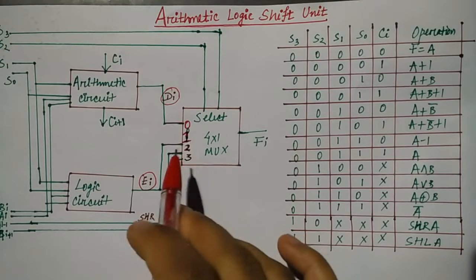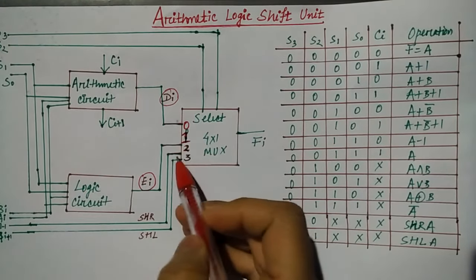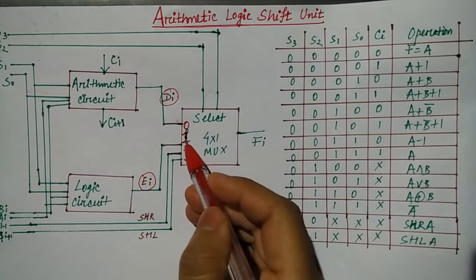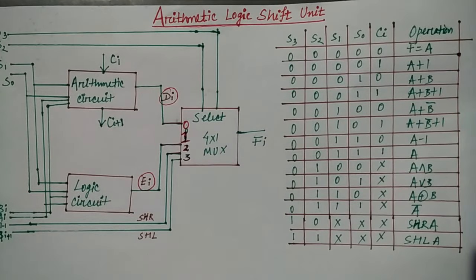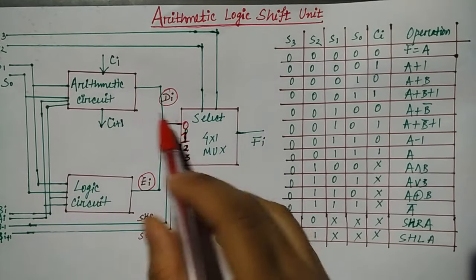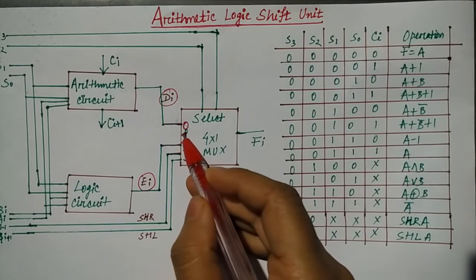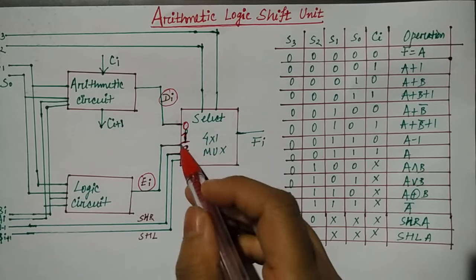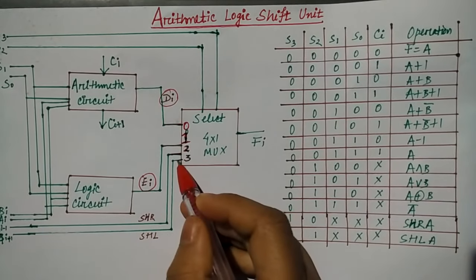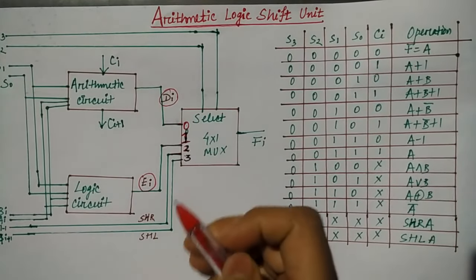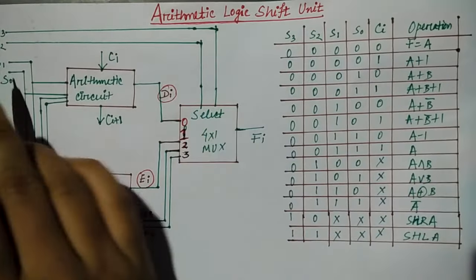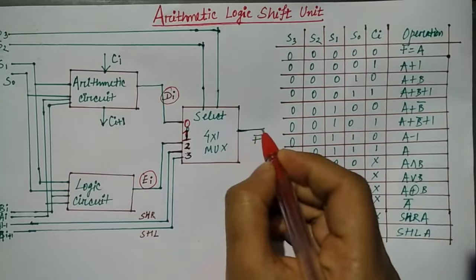So multiplexer 4 into 1, 4 inputs. 0th input is the output of arithmetic circuit, first input is output of arithmetic circuit, second is output of logic circuit, third is shift right, and fourth is shift left. Counting is 4 but numbering is 0,1,2,3. The selection line is S2 and S3 and its output is F5.